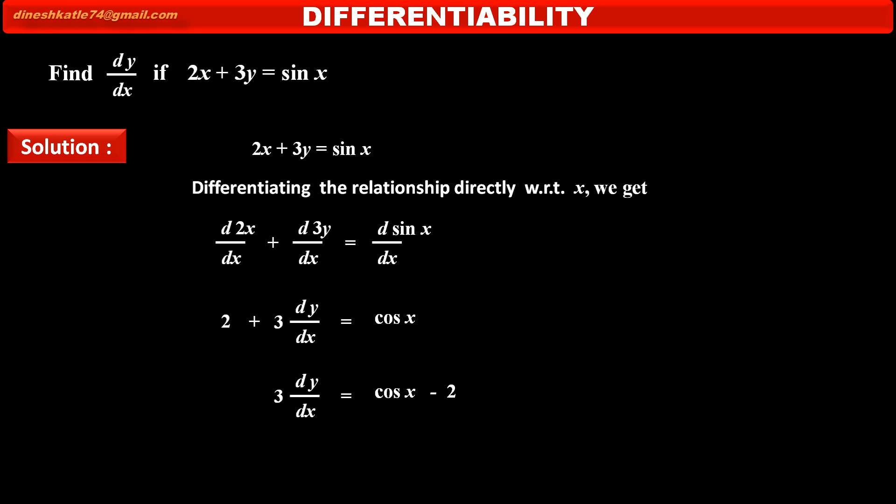Subtracting 2 from both sides, we get 3 into dy by dx is equal to cos x minus 2. Dividing by 3 on both sides, we get dy by dx is equal to cos x minus 2 upon 3. This is the value of dy by dx for the given function.